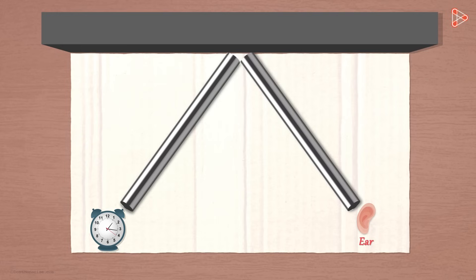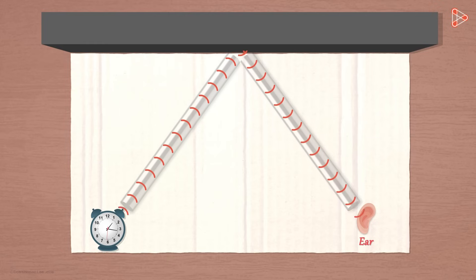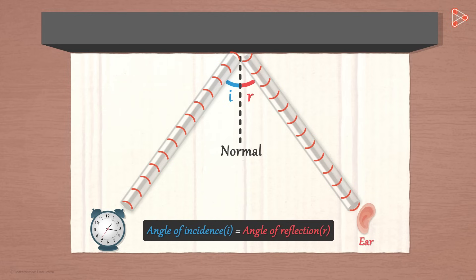This is an example of reflection of sound. Yes, you are hearing the reflected sound. The sound wave from the clock passes through this pipe and is incident on the wall. It gets reflected and passes through the other pipe and enters your ear. You will notice that these two angles are approximately equal. The angle of incidence will be equal to the angle of reflection if we ignore any human errors.